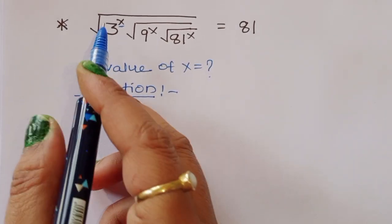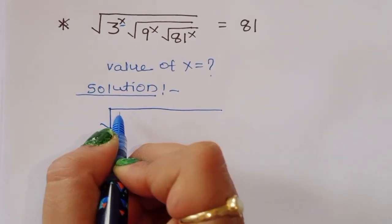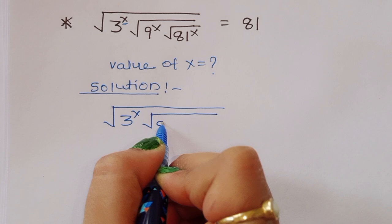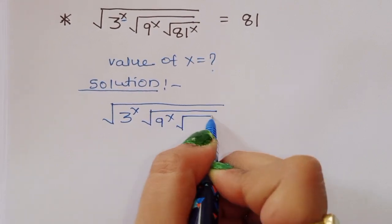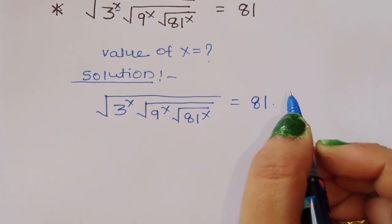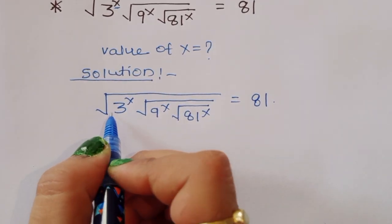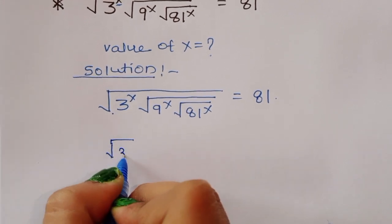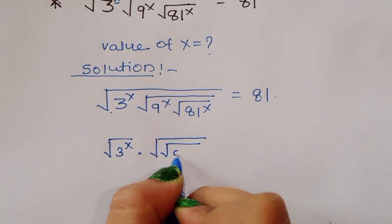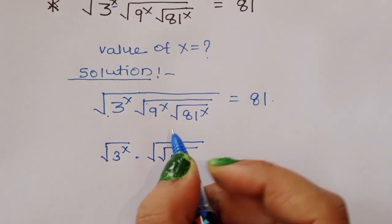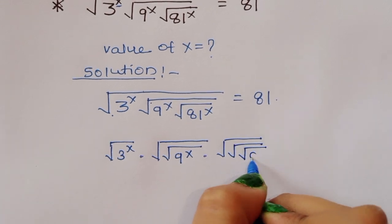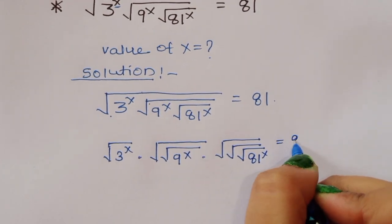How can we find the value of x? First, what is given: square root of 3 power x, times square root of 9 power x, times square root of 81 power x is equal to 81. We can write this by separating each term: square root of 3 power x, times square root of 9 power x, times square root of square root of 81 power x is equal to 81.